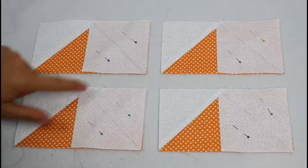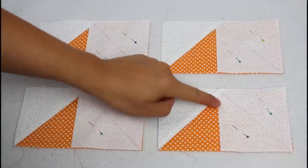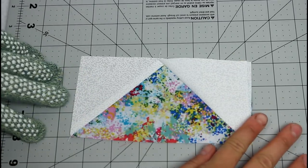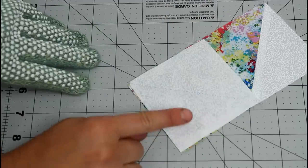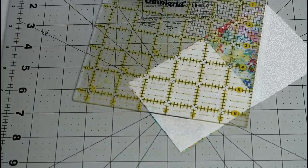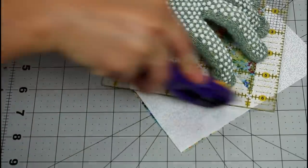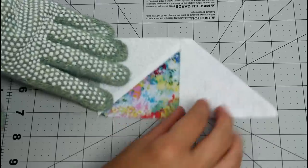Repeat for all eight rectangles. Then trim away those two underneath layers like before so that when the white bit is opened it forms the white corners. This is eliminating a lot of unnecessary bulk from the block. Press each unit nice and flat.